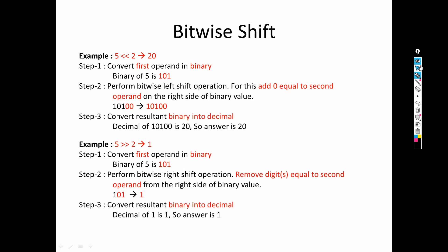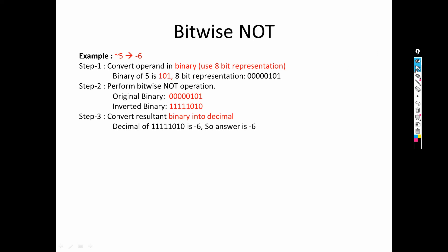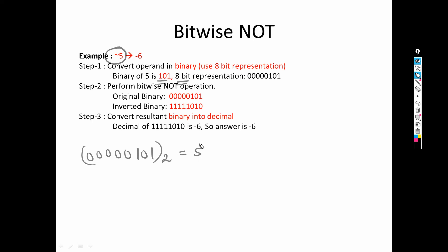The last bitwise operator is bitwise NOT. Similar to logical NOT, it inverts the value. It is somewhat tricky. We convert the only operand into binary — that is 101. But we need to represent this number in 8-bit representation, so we add 5 more zeros to make it 8 bits. This is the binary representation of 5 in 8 bits.